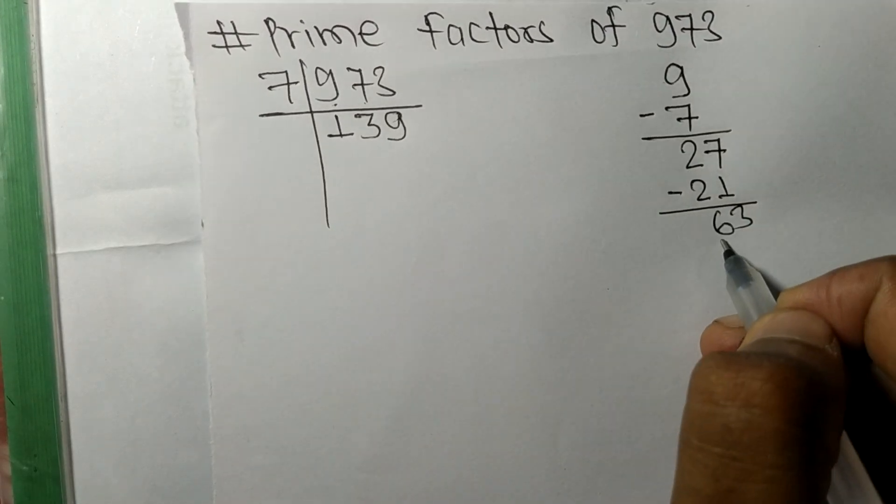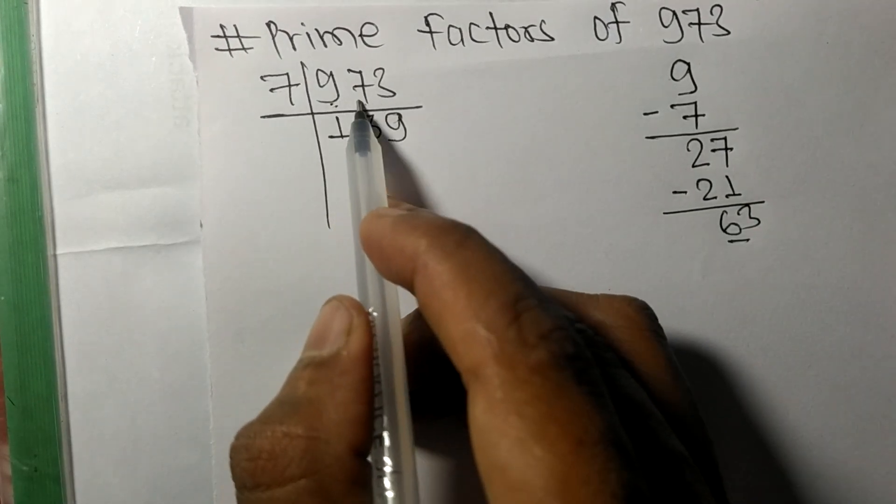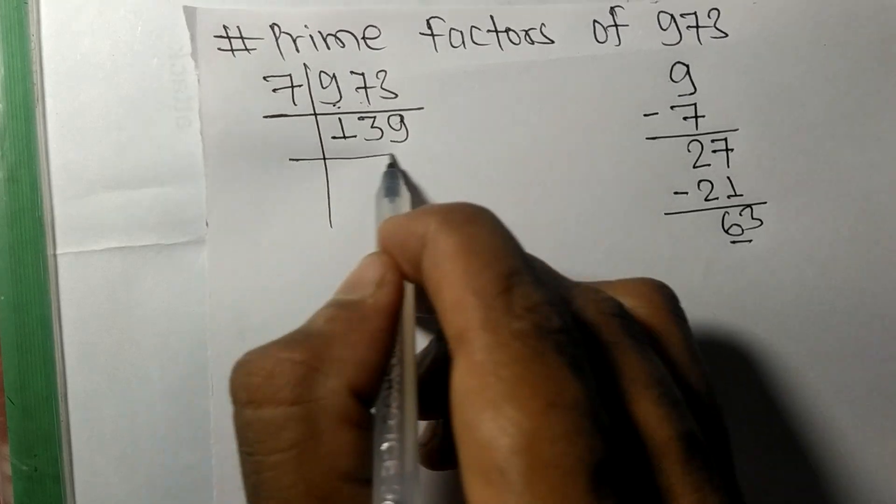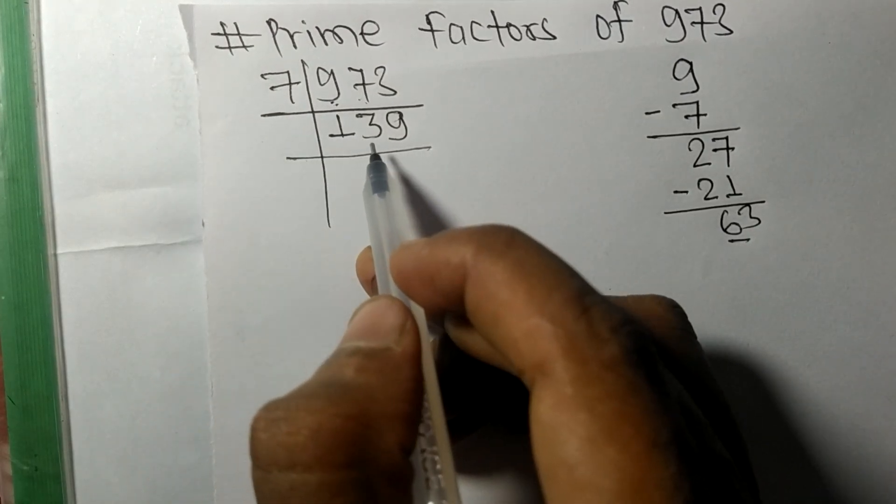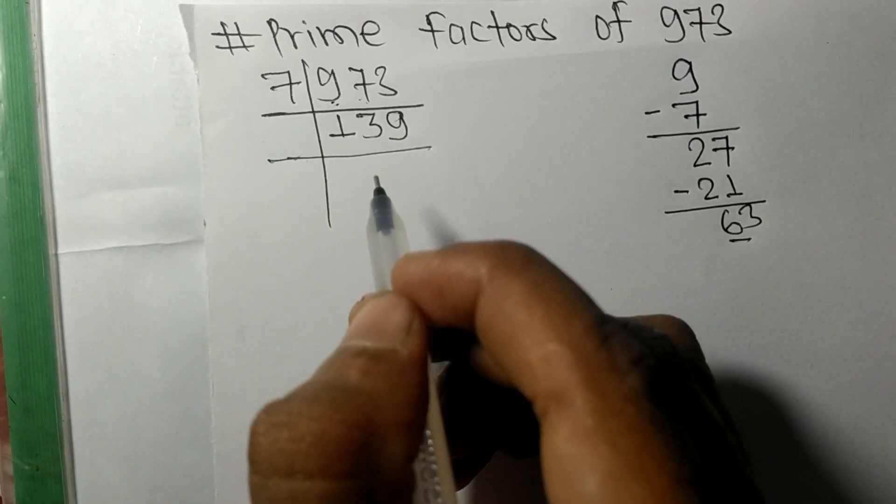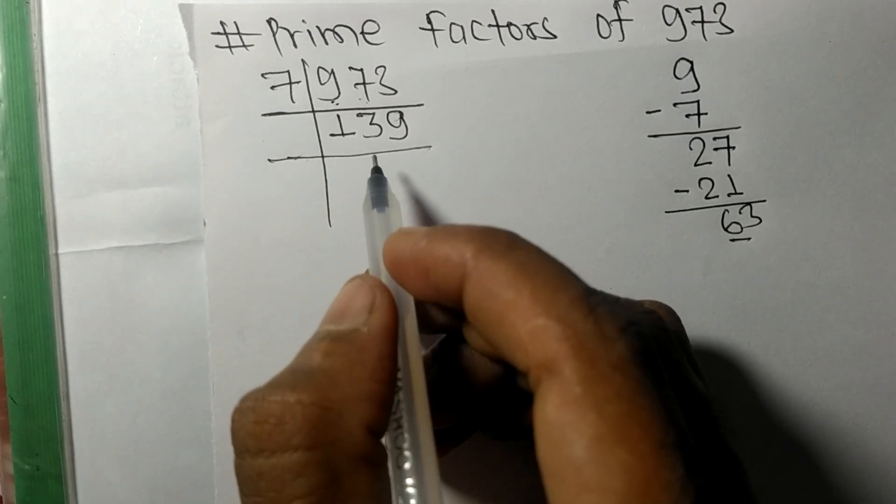Therefore 973 on dividing by 7 we got 139. So 139 is a prime number, so it is exactly divisible by 139 only.